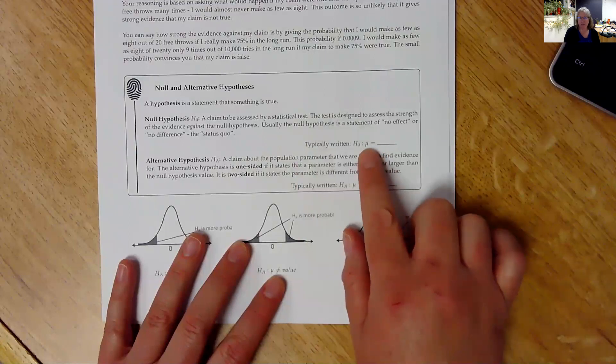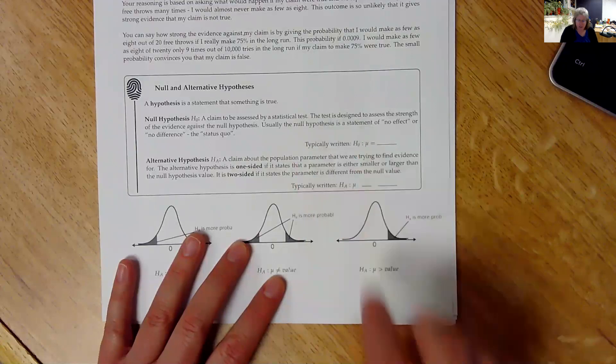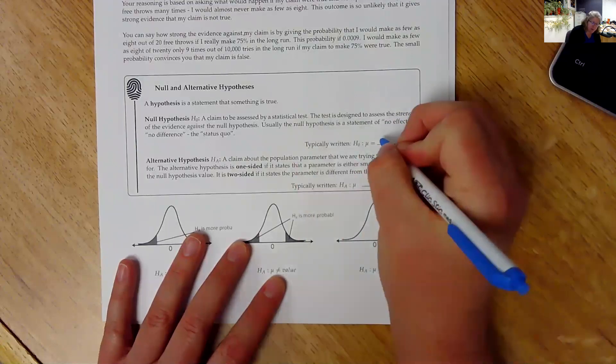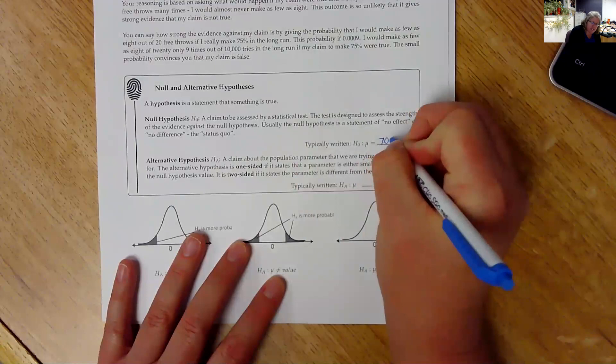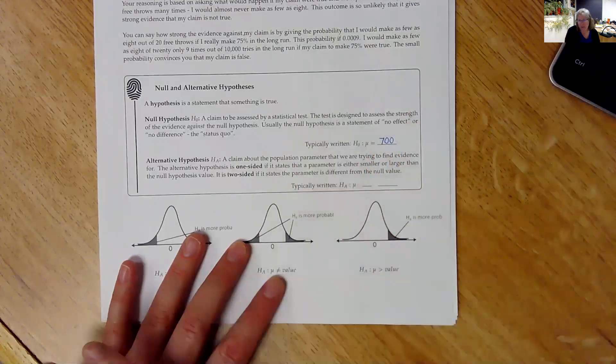And then what you write as the hypothesis is that mu is equal to something. So you're saying my population parameter, in this case my population mean, is equal to, using the light bulb example, I would say mu is equal to 700 hours.